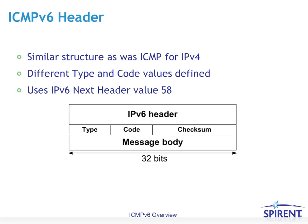The ICMPv6 header has a similar structure to ICMP for version 4. It has a type field, which is 1 byte, a code field which is 1 byte, and a checksum which is 2 bytes, followed by the message body. A key difference is that it uses a next header value of 58, whereas ICMPv4 used a protocol field value of 1.